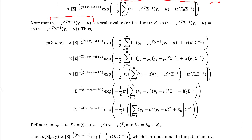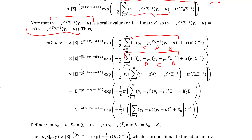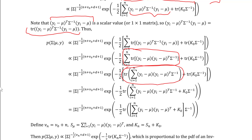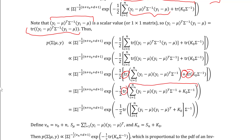Noting that this quadratic term is a scalar value or 1-by-1 matrix, the single value must equal its trace. Thus we replace this quadratic form with the trace of the quadratic form. Labeling the components of the quadratic form C, A, and B, we then use the cyclic property to reorder the matrices. Recalling that the sum of the trace of a matrix is the trace of the sum of the matrices, we re-express this term as the trace of the sum of the individual matrices. We then factor out the sigma-inverse term to get the trace of the sum of these matrices multiplied by sigma-inverse.